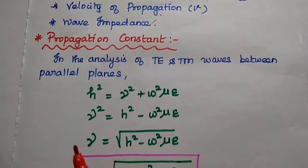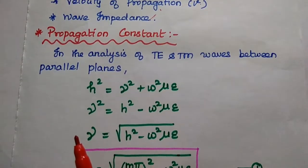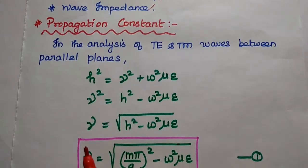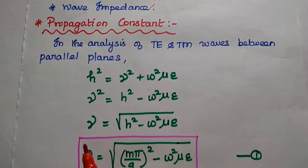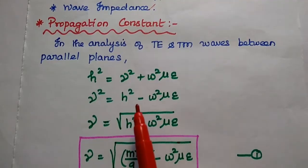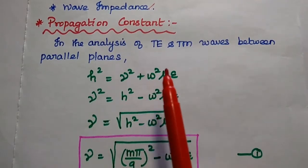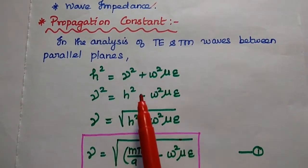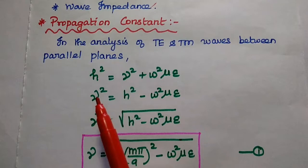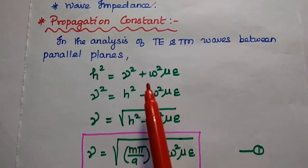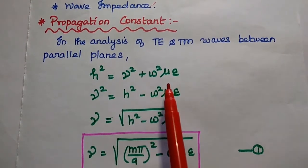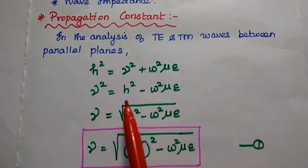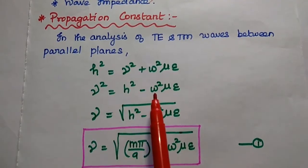Let's start with the propagation constant, which is a very important characteristic. Based on this propagation constant, we can find out the other parameters. We have already derived the field components for the transverse electric and transverse magnetic waves between parallel planes. In that analysis, we have assumed H² = γ² + ω²με. From this, we can find out γ² = H² − ω²με.